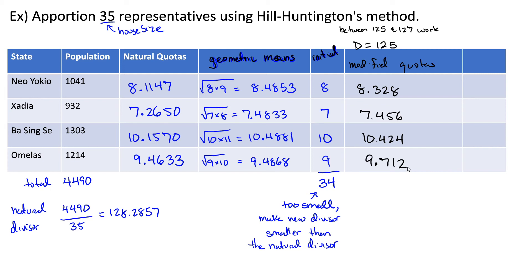Now we compare our modified quotas to their geometric means. A modified quota of 8.3 is less than its geometric mean of 8.4, so this rounds down to 8. A modified quota of 7.45 is less than its geometric mean of 7.48, so this rounds down to 7. A modified quota of 10.42 is less than its geometric mean of 10.48, so this rounds down to 10. A modified quota of 9.7 is greater than its geometric mean of 9.48, so that rounds up to 10. Adding all of these up gives 35, which is the correct house size, making this our final allocation.